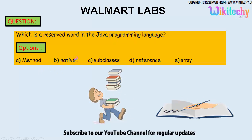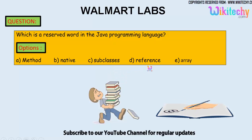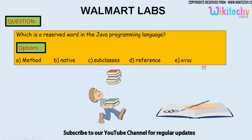The options are: method, native, subclasses, references, and array. Let's see which one is a reserved word.